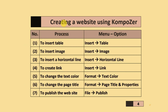When you create a website using Composer, the menu options are as follows: to insert a table, go to Insert > Table. To insert an image, go to Insert > Image. To insert a horizontal line, go to Insert > Horizontal Line. To create a link, go to Insert > Link. To change text color, go to Format > Text Color. To change the page title, go to Format > Page Title and its properties. To publish the website, go to File > Publish.